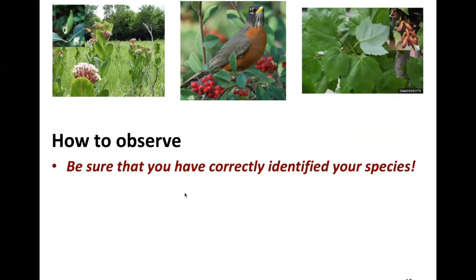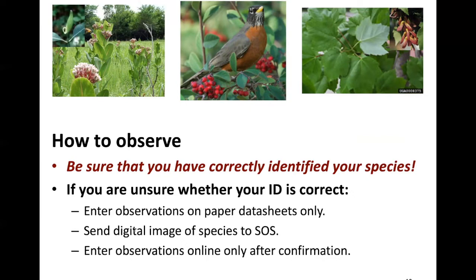So how to observe. Be sure that you have correctly identified your species. If you are unsure whether your identification is correct, you'll want to enter your observations on paper data sheets only. Then send a digital image of the species or the phenophase to us — we're happy to help identify it and have advisors to assist. Enter observations online only after you confirm what the species or phenophase is that you're observing.